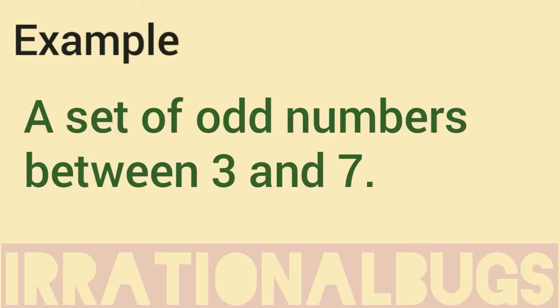For example, a set of odd numbers between 3 and 7. Between 3 and 7 if we count the odd numbers, then it becomes 5, it becomes single, so this is a singleton set.